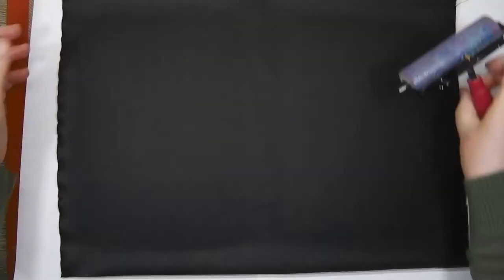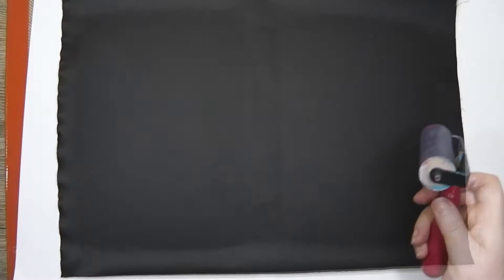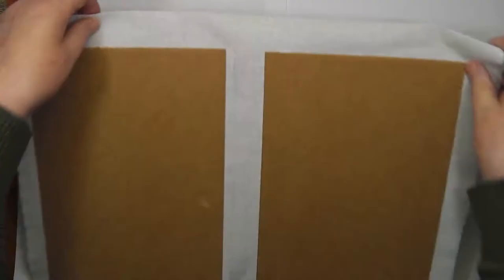Pushing it down, giving it a good roll. Turning it over and giving it a roll from the other side, making sure of course that the hands and the brayer are all clean. You don't want to get any adhesive on the right side of the cover.